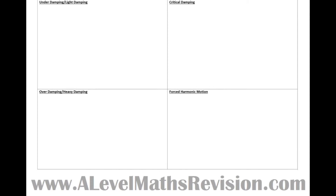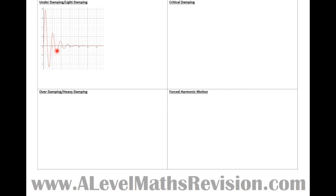First of all let's look at what light damping is. There's a graph of what light damping looks like. When I think about light damping I imagine a hospital door swinging back and forth — it swings one way then the other but loses a little bit of its momentum, continuing to lose momentum until eventually it settles around the door closed position, i.e. zero displacement from the center of oscillation.